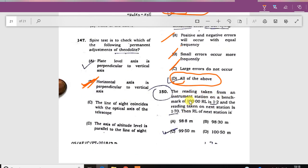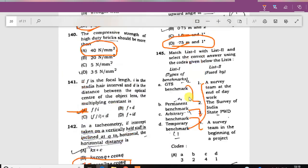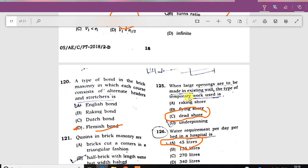Reading taken from instrument station on benchmark with RL 100 is 1.2. Then reading taken at next station is 1.7. What is the RL of next station? The RL of next station is 99.50. Please like this video if you found it helpful, subscribe and share it, and leave a comment. Check out our other videos in the description box.